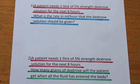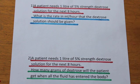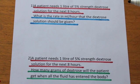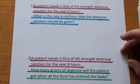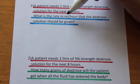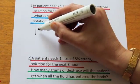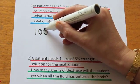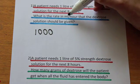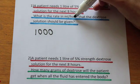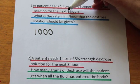Let's look at question one. The question is asking for the rate in mils per hour that the dextrose solution should be given. We select the information about the mils — one liter is 1,000 mils — and this is going to be divided by the number of hours, which in this question is eight.